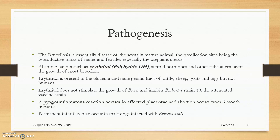Brucella has a predilection site in the pregnant uterus because of an allantoic factor called erythritol — a polyhydric alcohol with many OH groups — which increases the growth of most Brucella species. Erythritol is secreted by the allantois and is present in the placenta and male genital tract of animals, but not in humans. Importantly, erythritol does not stimulate the growth of Brucella ovis, and it inhibits Brucella abortus strain 19, the attenuated vaccine strain.